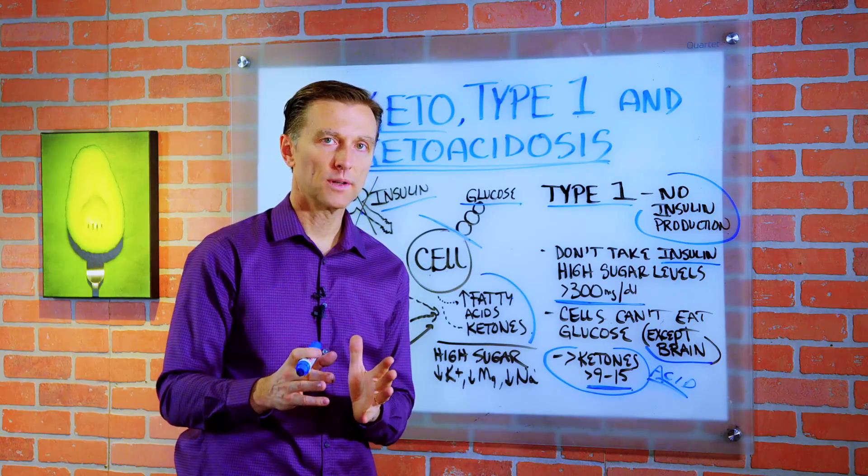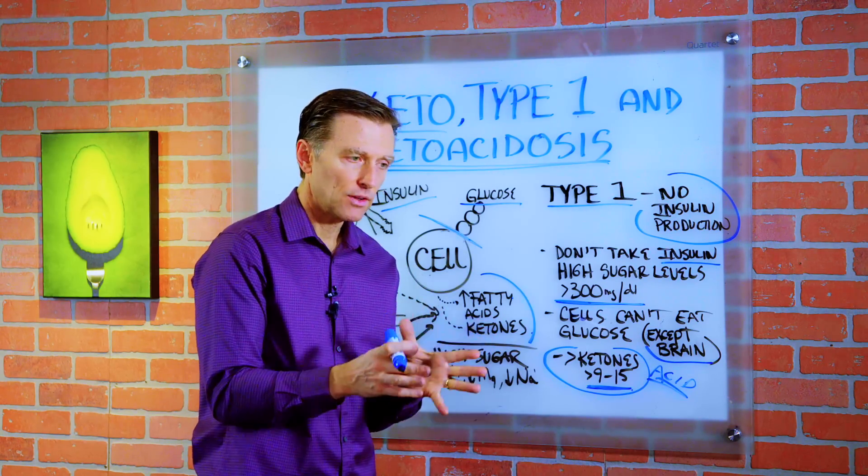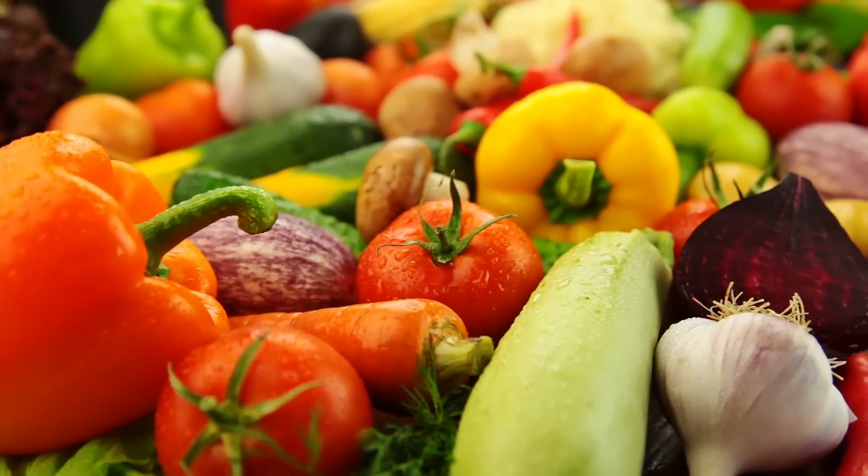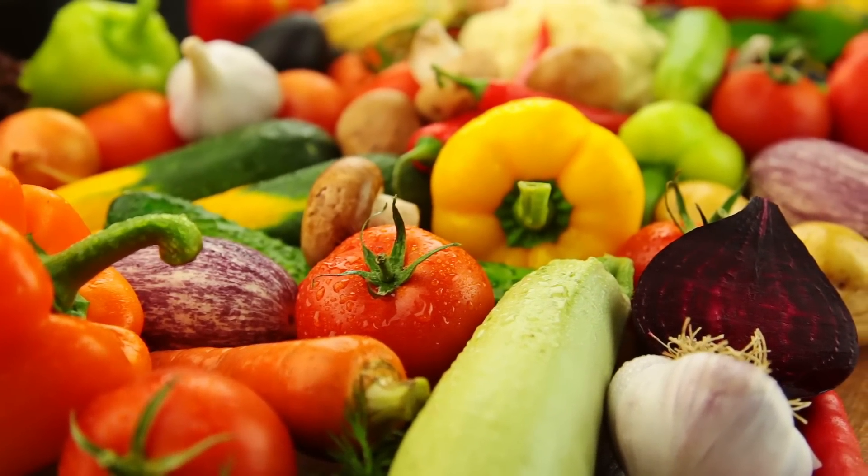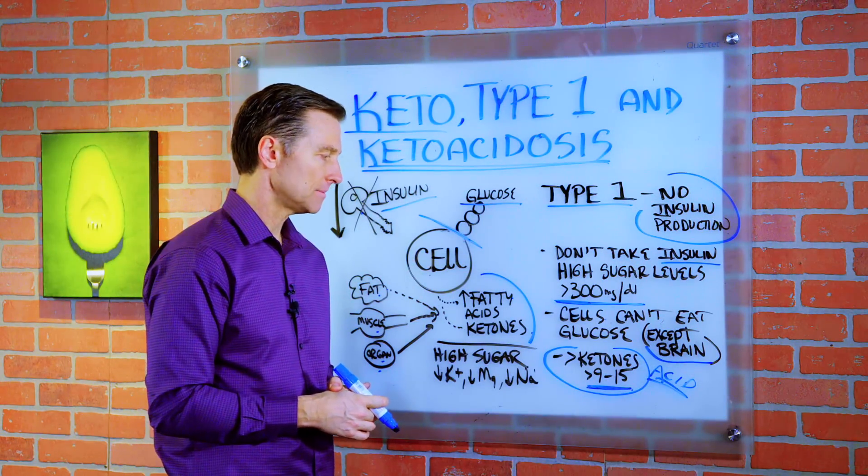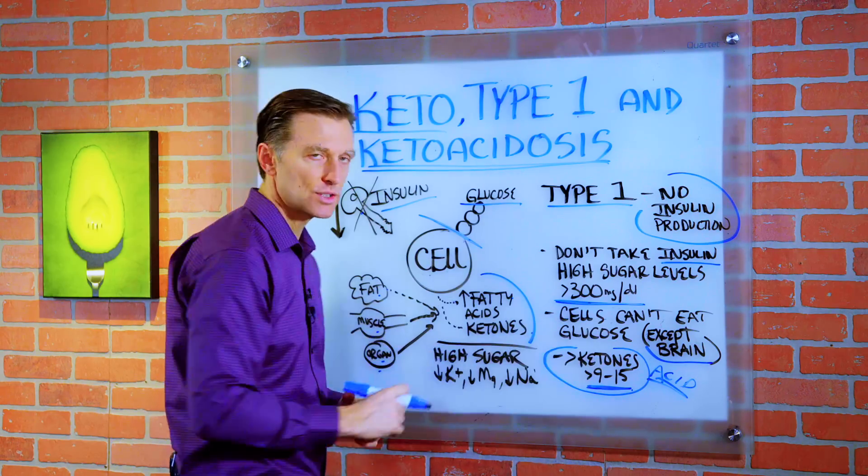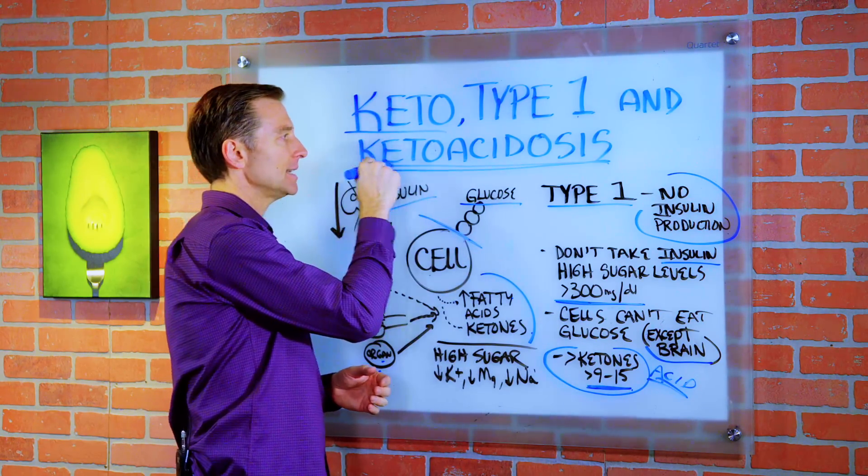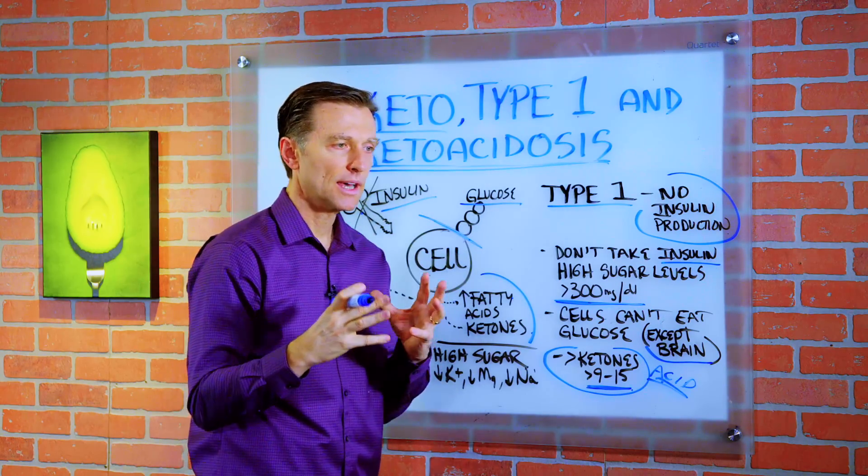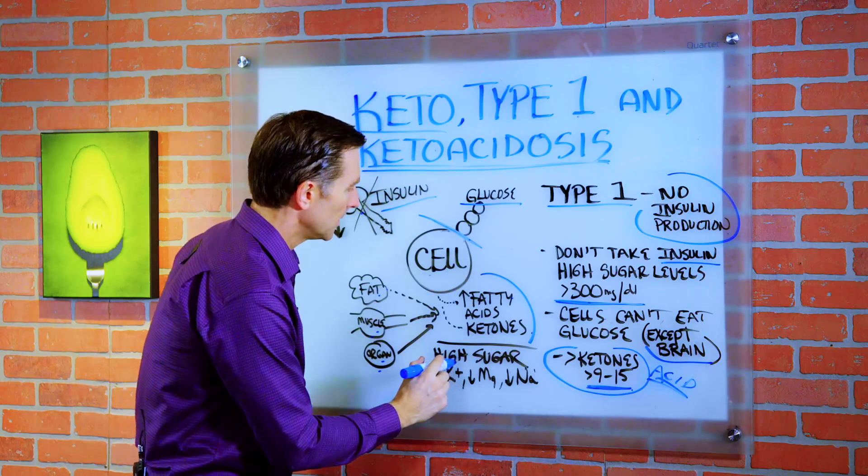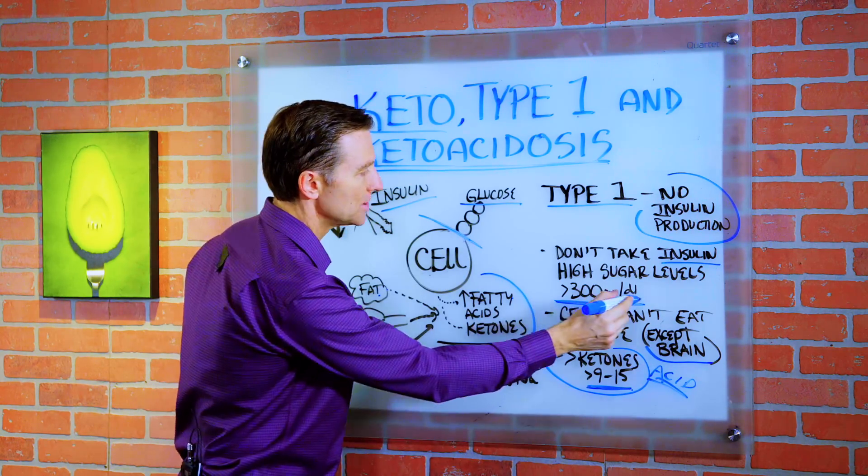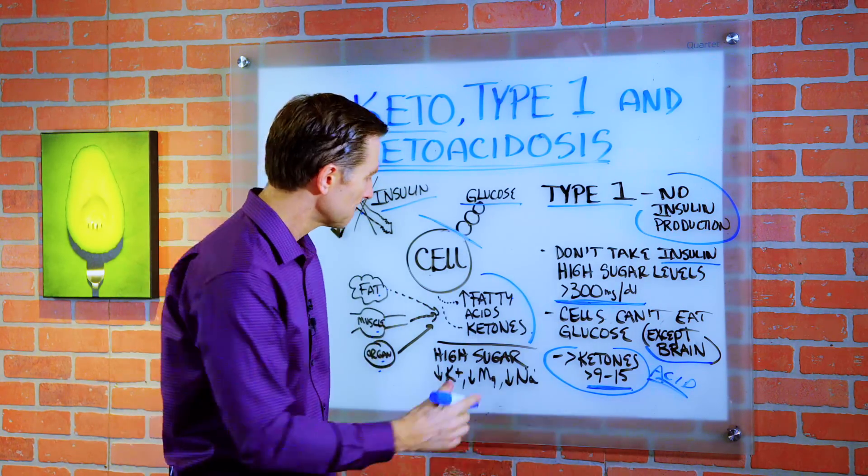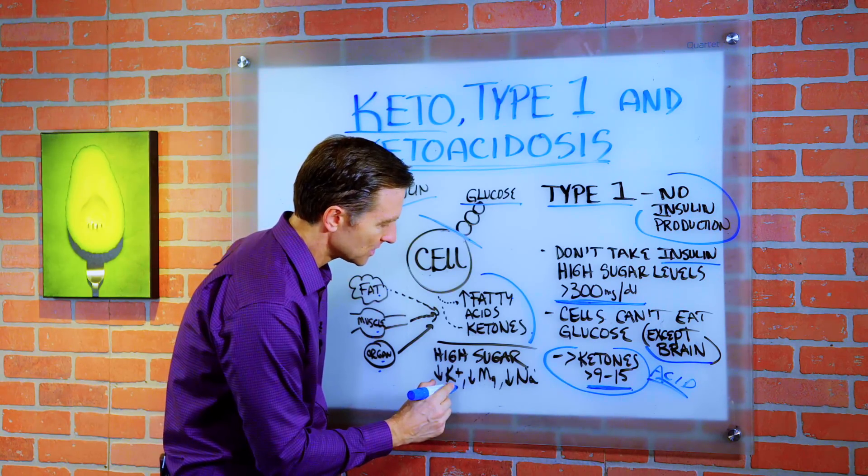And this is why it's so important when you're doing keto to do the healthy version of keto. And I'm talking a lot of vegetables. The vegetables have alkaline minerals that help buffer this acid situation. So it's going to be really hard to get this condition if you're consuming a healthy diet. Because what happens if you have high blood sugar and you're not taking enough electrolytes from either vegetables or externally, then you're going to actually lose your electrolytes.